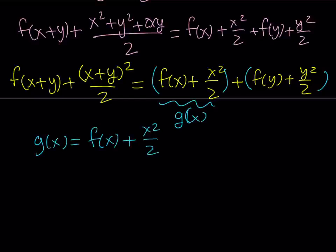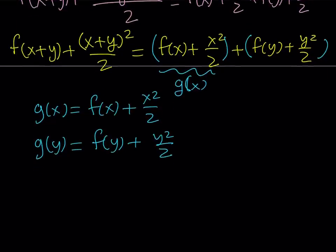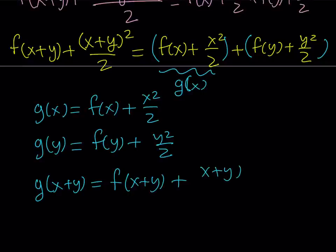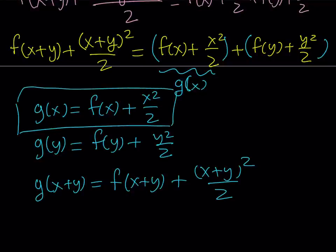Since g(x) is defined as f(x) + x²/2, you notice that if I replace x with y, I get g(y). So g(y) becomes f(y) + y²/2. And if I replace x with x+y, and that motivation comes from the left hand side, I get f(x+y) + (x+y)²/2. All of this comes from the definition of g(x), which we basically defined as f(x) + x²/2.